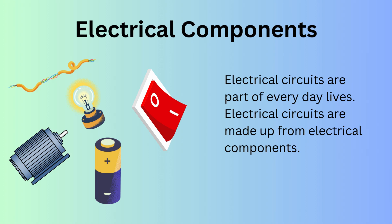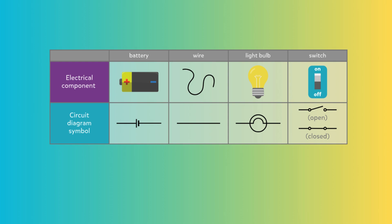Let's learn about some of the electrical components used in circuits. Here is a table showing a few of them. The battery symbol is two lines — one longer and one shorter. The symbol for a wire is a straight line, and wires connect all the parts of the circuit and allow electricity to flow between them. The symbol of a light bulb looks like a circle with a small cross or loop inside it. The switch controls whether the circuit is open or closed.